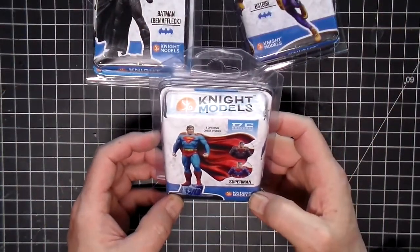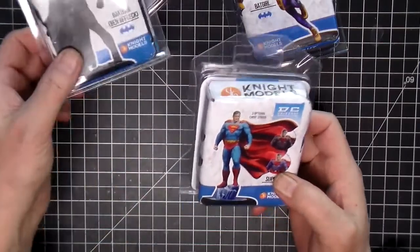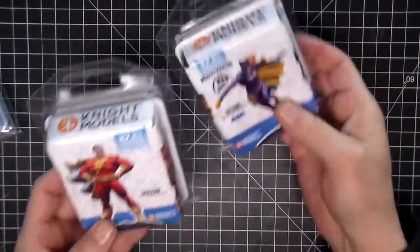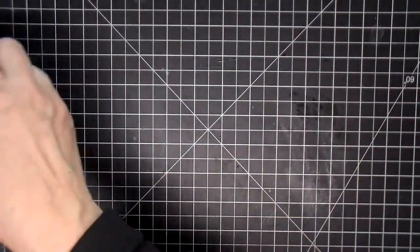I've also gotten some Knight Models. Got a Superman here and then an Affleck Batman, a Shazam, a Batgirl. I've always liked the miniature stuff. And of course with 3D modeling you can get the details so tight now and I just want to get better at my hand painting skills.